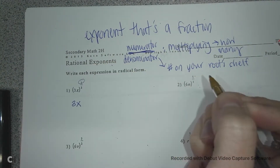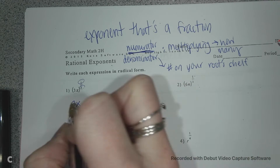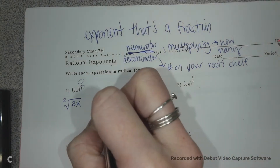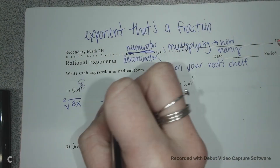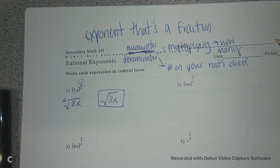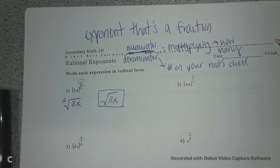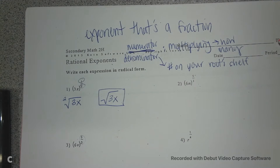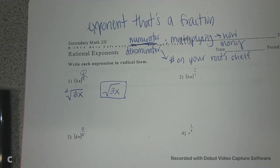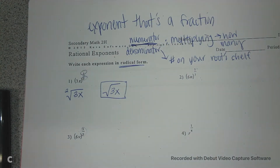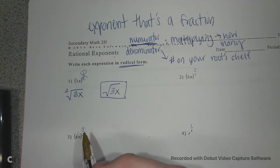For 3x to the one-half power: the exponent is 1, so to the first power doesn't change it, so we keep 3x. The 2 goes on the shelf, so we get the square root of 3x. We're taking fractional exponents apart and writing them in radical form.